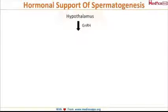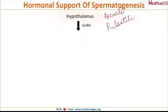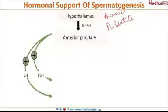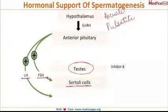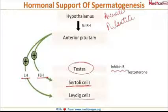The hormones supporting spermatogenesis start with the hypothalamus, which releases GnRH (gonadotropin-releasing hormone) from the arcuate nucleus in a pulsatile fashion. GnRH acts on the anterior pituitary, leading to release of the gonadotropins FSH and LH. The end organ is the testis: FSH has its receptor on the Sertoli cells, and LH has its receptor on the Leydig cells.